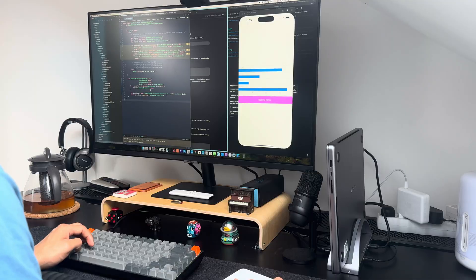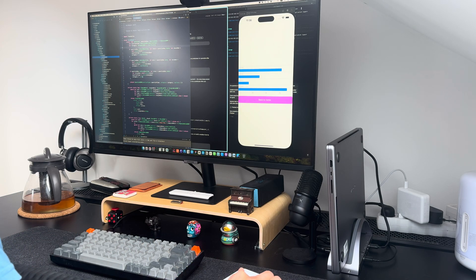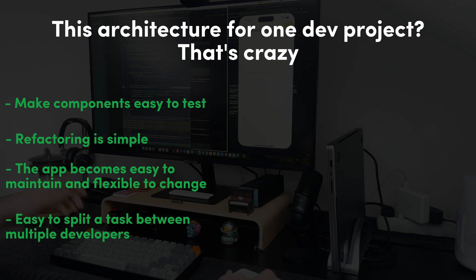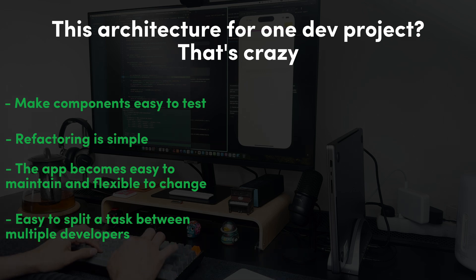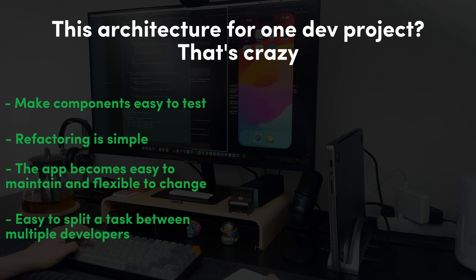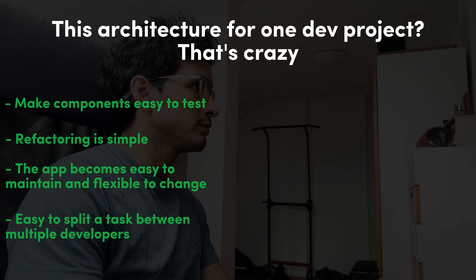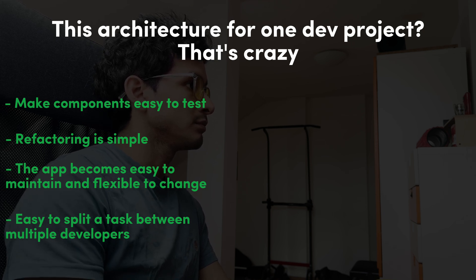Which architecture do we want to use for this app? I decided to go for clean architecture. I know what you might say — this architecture for one solo project, that's crazy, right? But despite everything you could say about it, I found that using this architecture gives a lot of benefits: making components easy to test, refactoring simple — and I'm talking from experience here. The app becomes easy to maintain and flexible to change, because you know where to locate anything — business logic, just check the use cases; cache or database problem, check the repositories. It's also easy to split tasks between a team of multiple developers, which is not my case obviously.